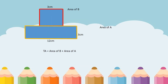This is also an example of an irregular figure because it is made up of a square and a rectangle. We are going to find the total area of this irregular figure. Let us name the square as B and the rectangle as A. To find the area of square B, we use the formula A equals S times S, or side times side. We have 3 centimeters times 3 centimeters, which is equal to 9 square centimeters as the area of B.